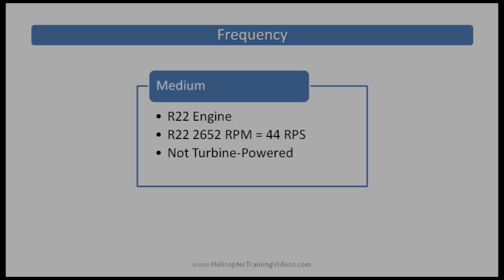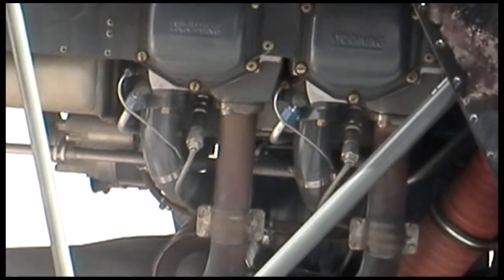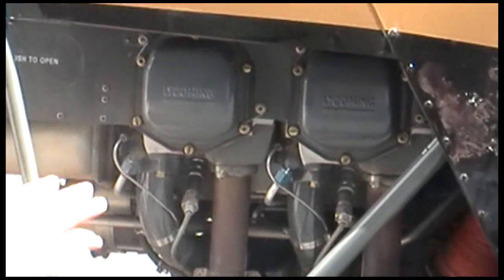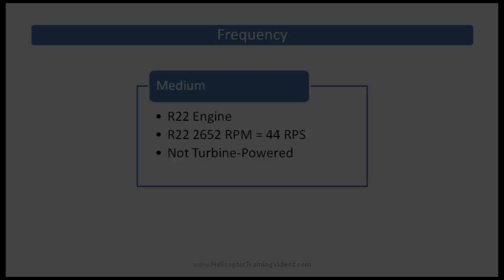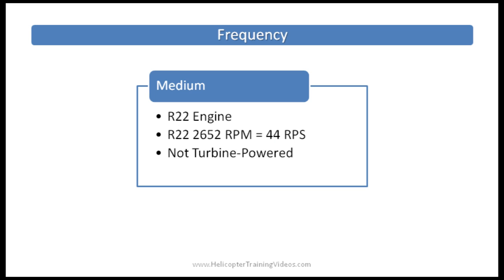Medium frequency vibrations. In the R-22, medium frequency vibrations are associated with the engine, often hard to feel due to dampeners. The R-22 engine has 2,652 RPM at 104 percent, which equates to about 44 revolutions per second. This doesn't apply if you're flying a turbine powered helicopter, which has a much higher RPM engine.